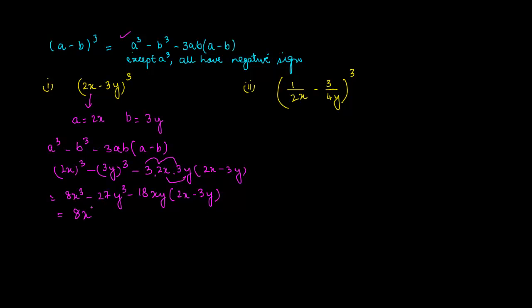And we can then finally open the brackets minus 18x into 2x is 36x square y. Minus into minus is plus, 54xy square. And this is basically your answer.